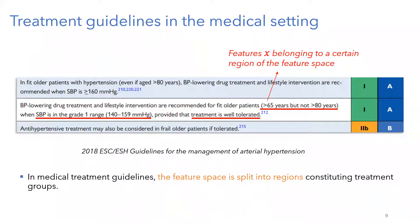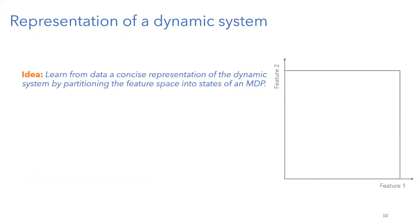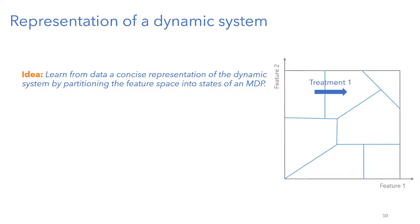This suggests there are some inherent treatment groups among patients and in the features. The question is: can we learn these treatment groups? If they exist — these inherent groups of patients that behave the same — can we learn them? This would allow us to simplify the system. Precisely, the idea is to partition the feature space such that in every part of the partition, everything behaves the same way: if they get the same treatments, they will transition to the same parts.